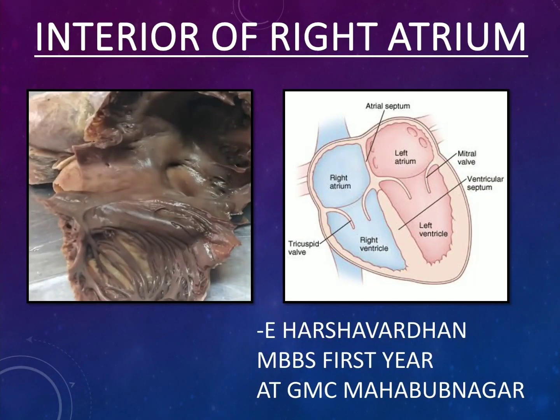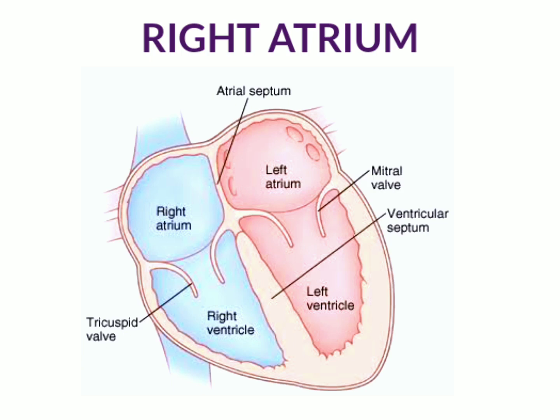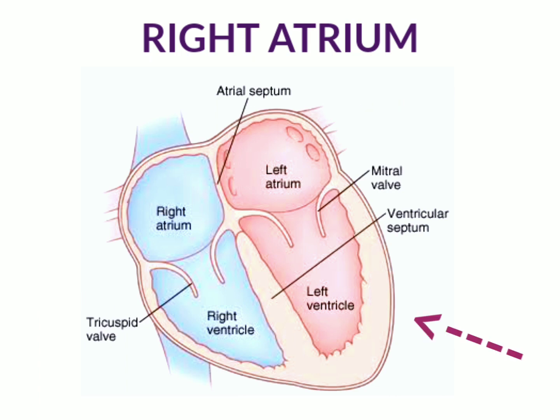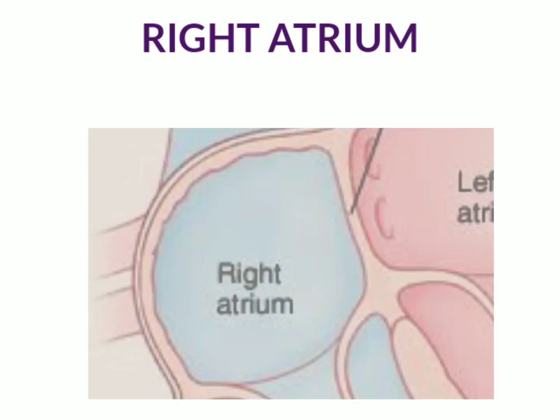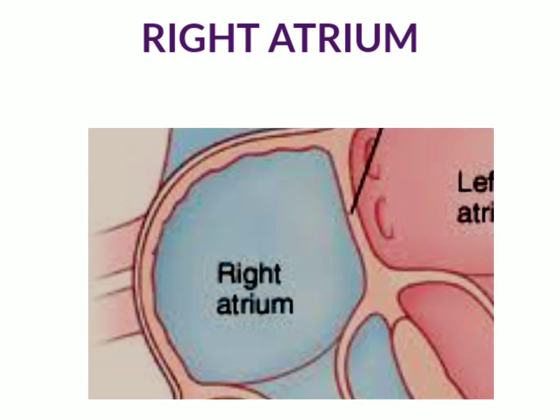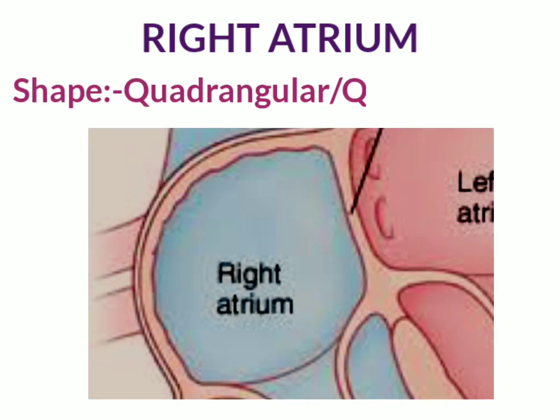Hi everyone, in this video we will be discussing about the interior of the right atrium. We know that there are totally four chambers in the human heart: the right atrium, right ventricle, left atrium and the left ventricle. The right atrium is one of the four chambers of the human heart and its shape is quadrangular.